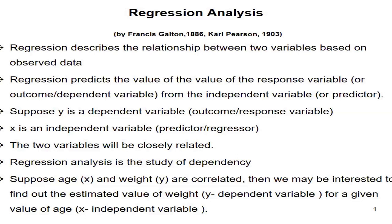So what is regression? Regression describes the relationship between two variables based on observed data. Like correlation, in regression analysis we find the relationship between two variables based on observed data. But regression also predicts the values of the response variable — that is, regression can be used for prediction of the dependent or outcome variable from the independent variable, also known as the predictor.